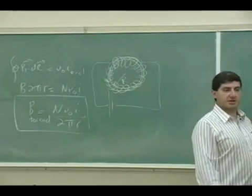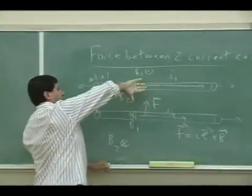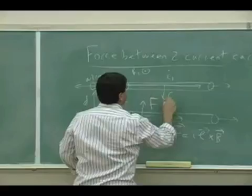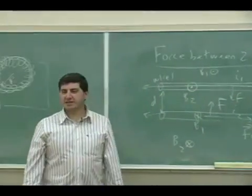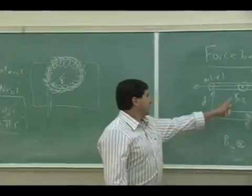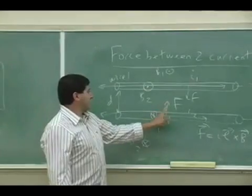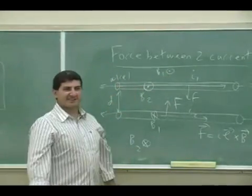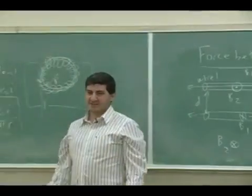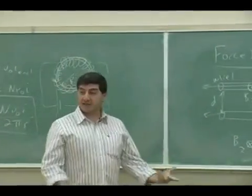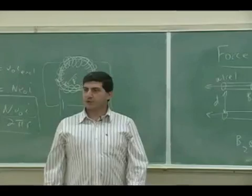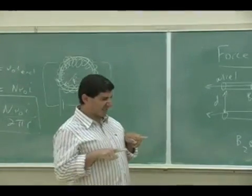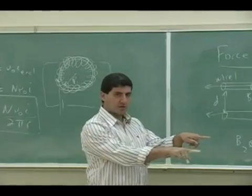So this B field is going to exert a force on that current carrying wire, I crossed into B. As a matter of fact, it better be in, because if this one attracts this, this cannot repel that. They can't both go up, you know that would be really weird, they're both going up. So yeah, they attract each other. So from this we learn two wires carrying current in the same direction attract each other.